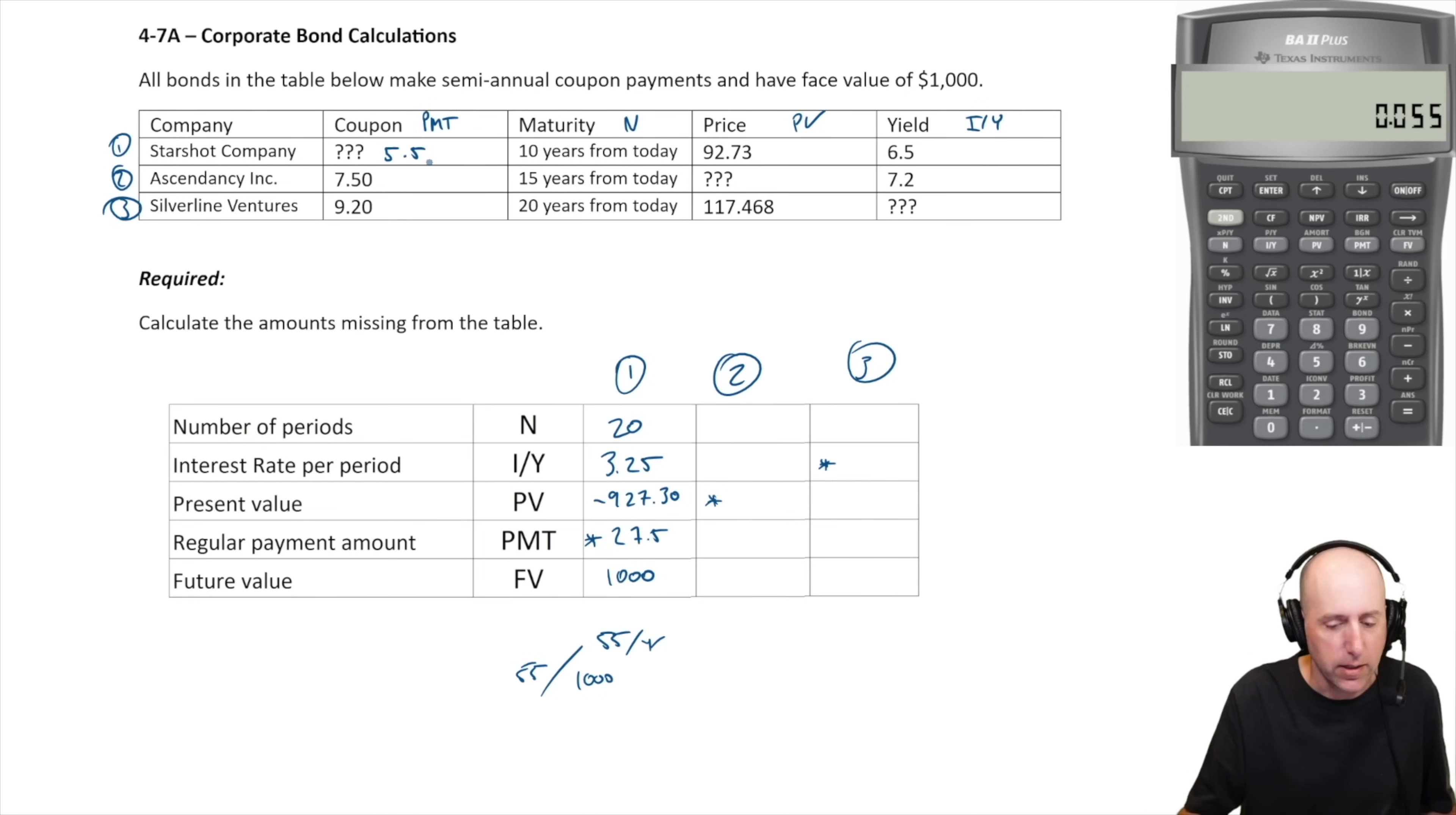Company two, Ascendancy. The coupon is 7.5%, so we're working backwards from what we just did on Starshot. It's a $1000 bond, 7.5% is $75 in annual coupon, divide by two we get $37.50. That's what's going to go into our calculator as the PMT. The number of periods for that second bond is 30 - 15 years semi-annual payments, that's 30 payments. I/Y is 7.2%, that's going to go in as 3.6% per half. Our FV is $1000.